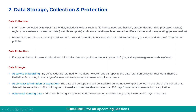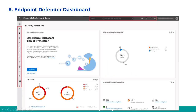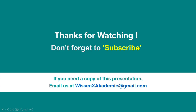For the use of advanced hunting data, Advanced Hunting is a query-based threat hunting tool that lets you explore up to 30 days of raw data. This is how the Defender for Endpoint dashboard looks like — it gives you a very comprehensive view of your environment, including active alerts, incidents being worked out, and other statistics.